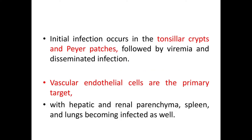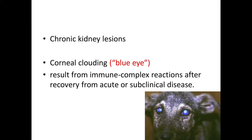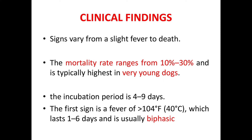Initial infection occurs in the tonsillar crypts and Peyer's patches, followed by viremia and disseminated infection. The primary targets are the vascular endothelial cells, along with hepatic and renal parenchyma; spleen and lungs also become infected. Chronic kidney lesions and corneal clouding — also called blue eye — result from immune complex reactions after recovery from acute or subclinical disease.